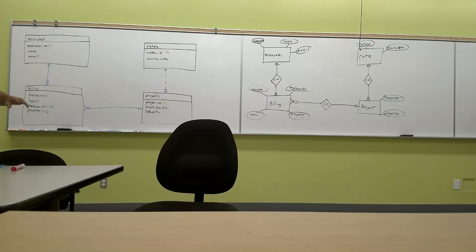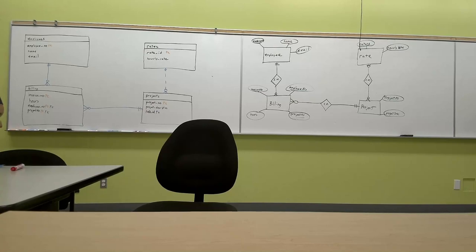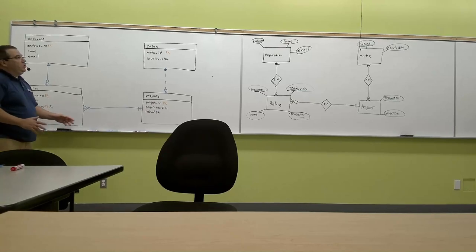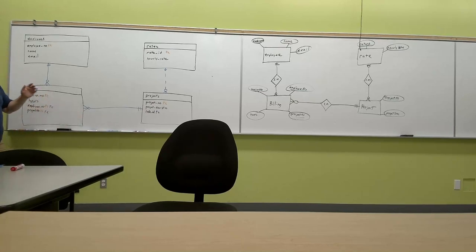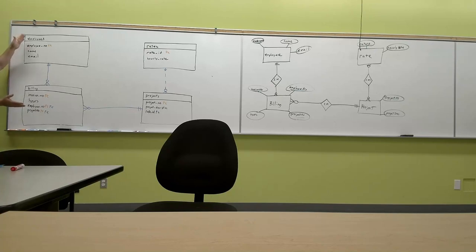Employee number is part of the primary key and it's also a foreign key, which makes this a weak entity because it can't exist without the rest. Our last relationship is the project - project number, which is also part of the primary key and a foreign key. So that's the logical diagram. The difference between logical and physical: the logical diagram has no data types and can apply to any database server. The physical diagram is specific to the server you're putting it on - so a physical diagram for MySQL would be different than one for Postgres.